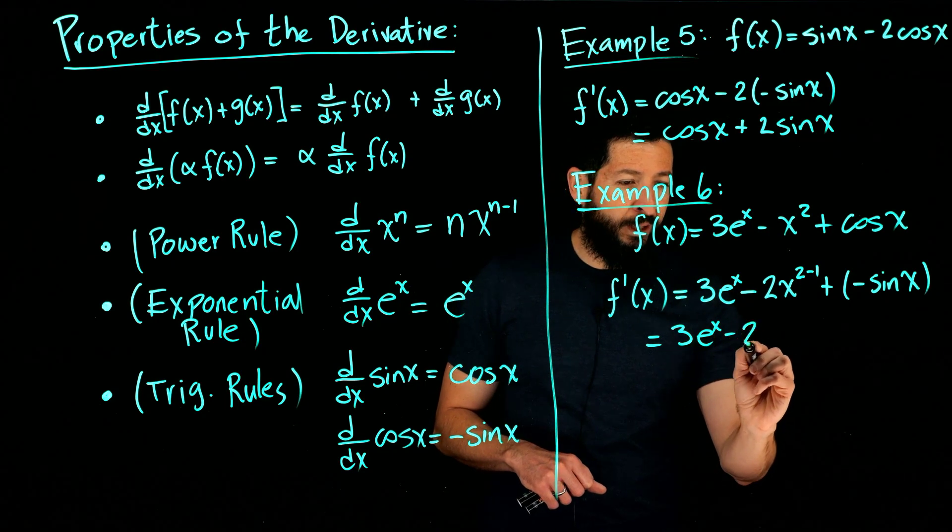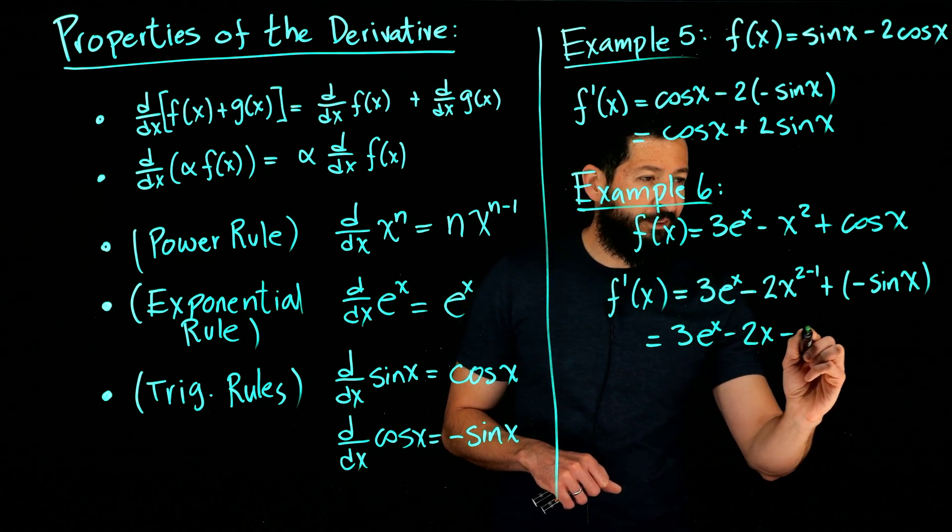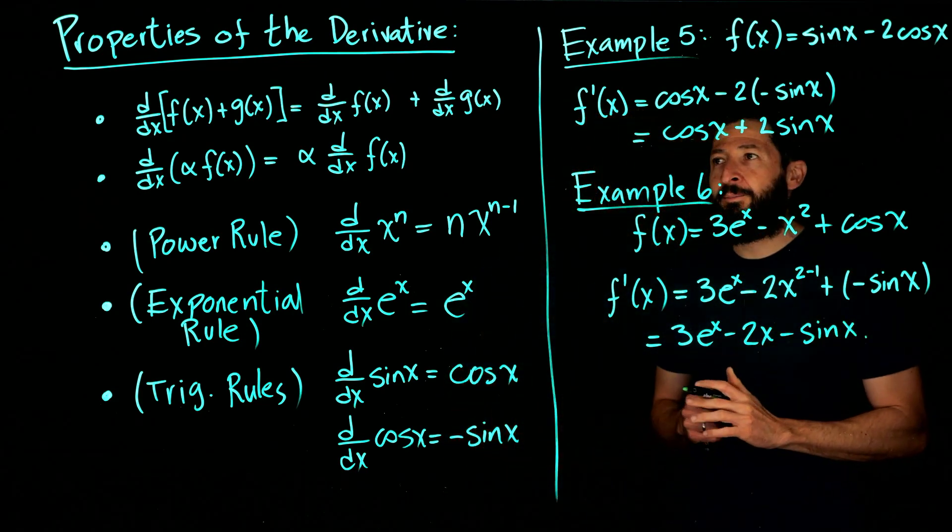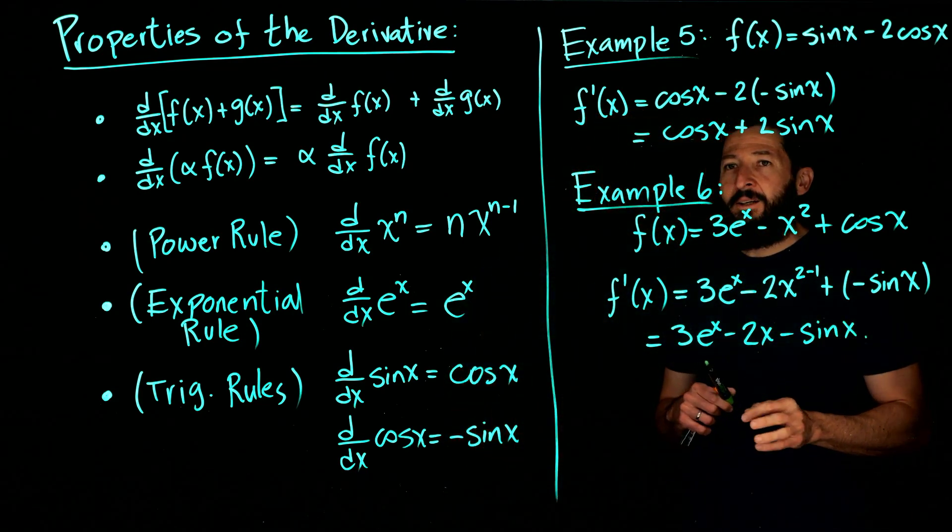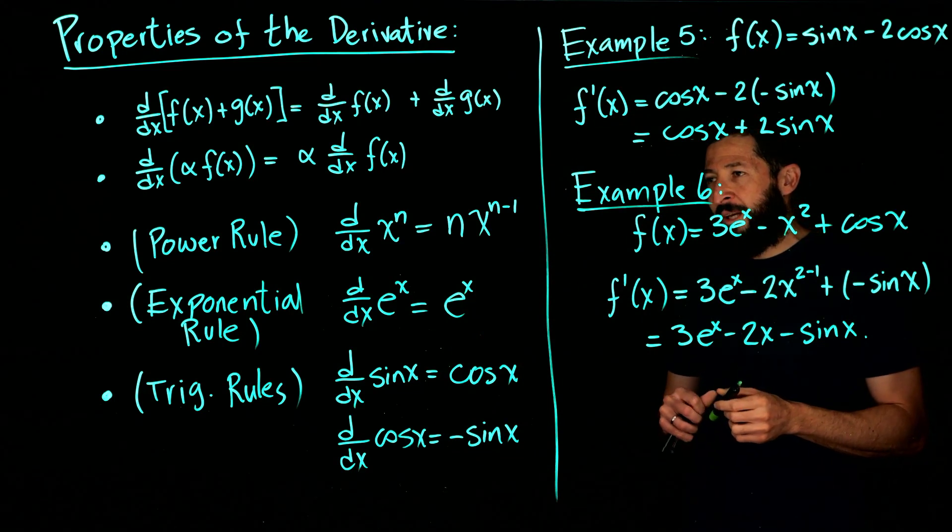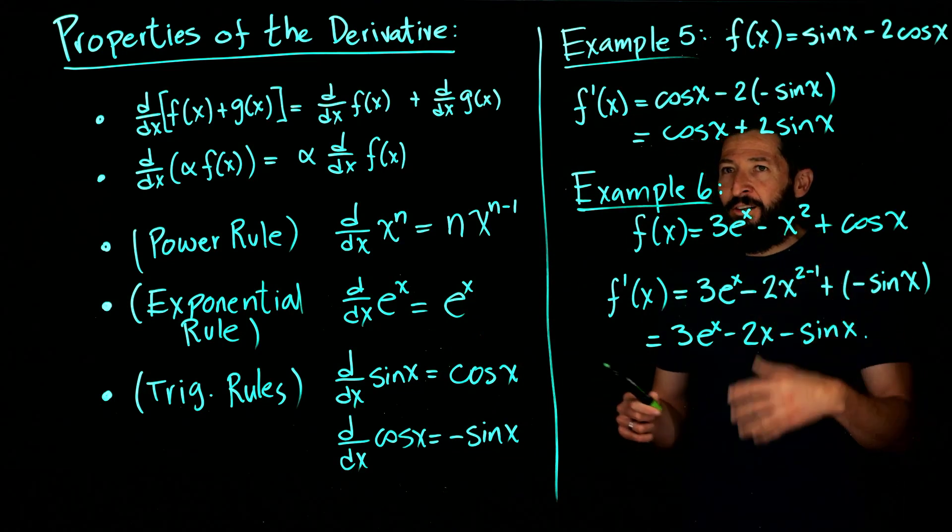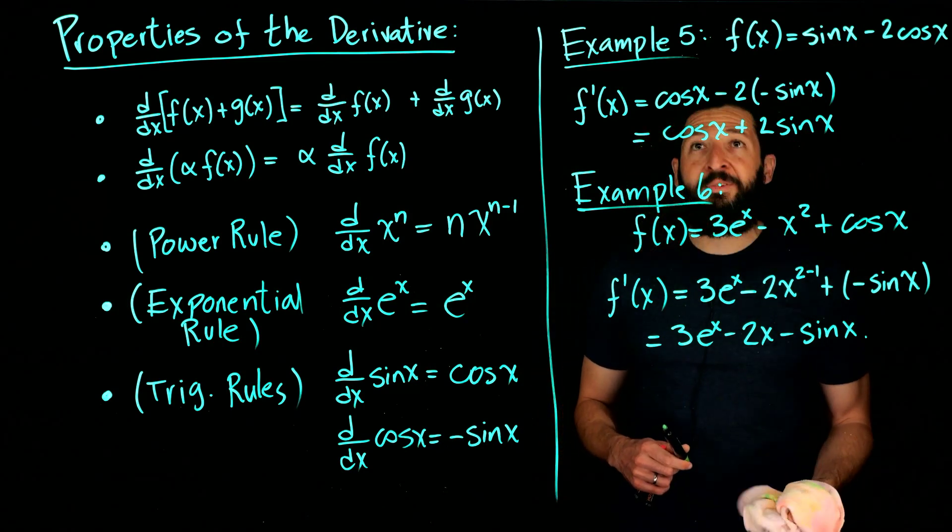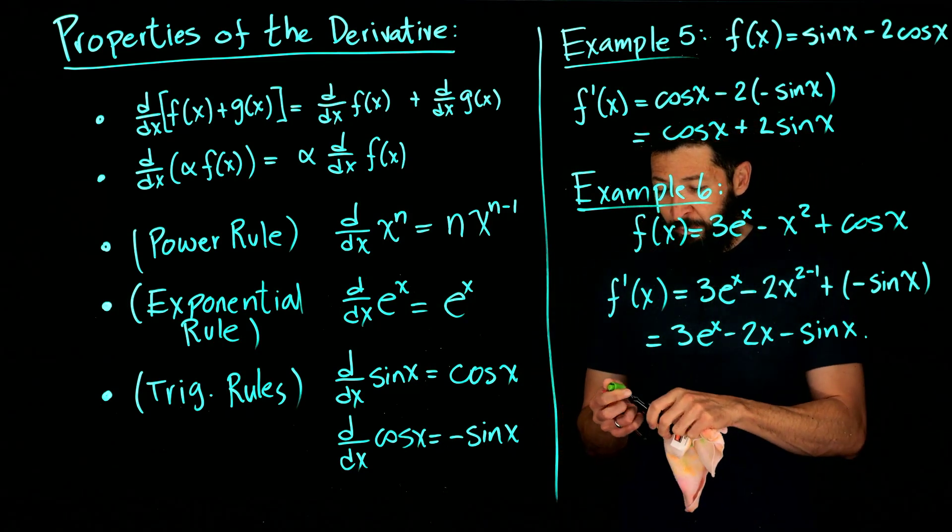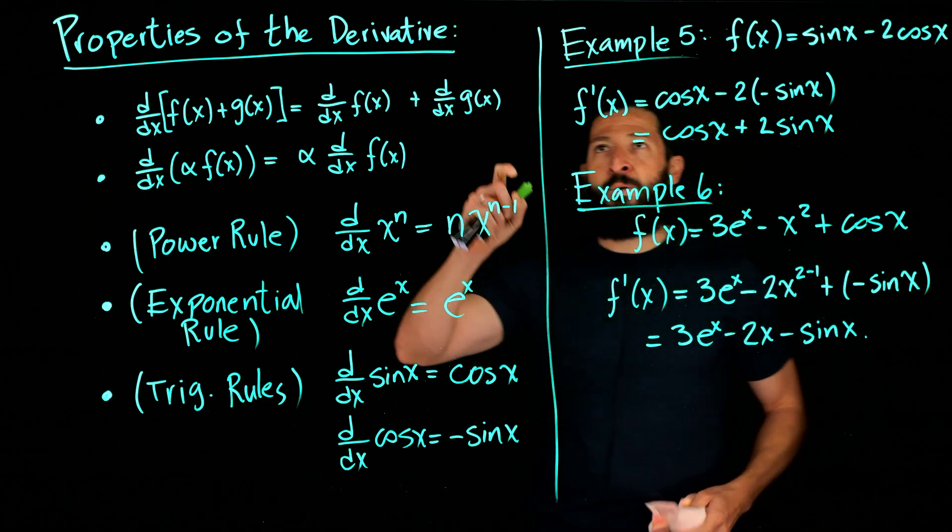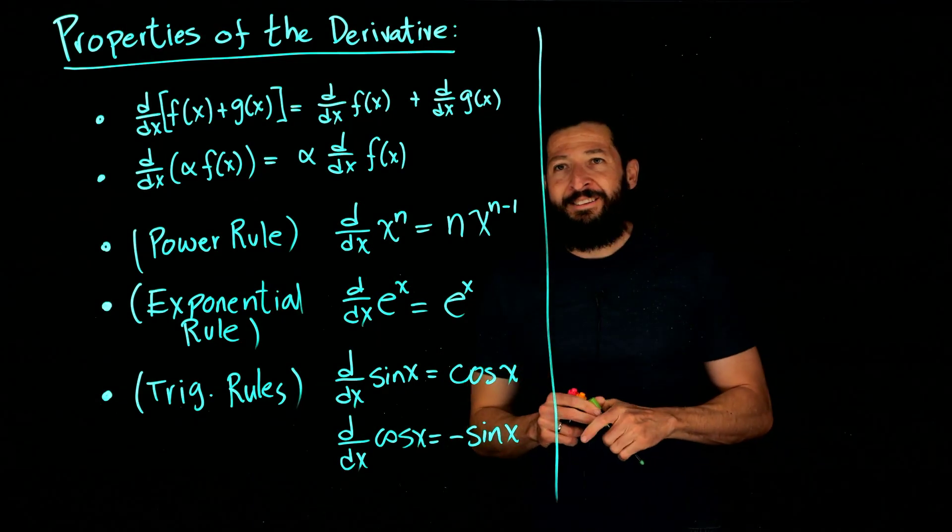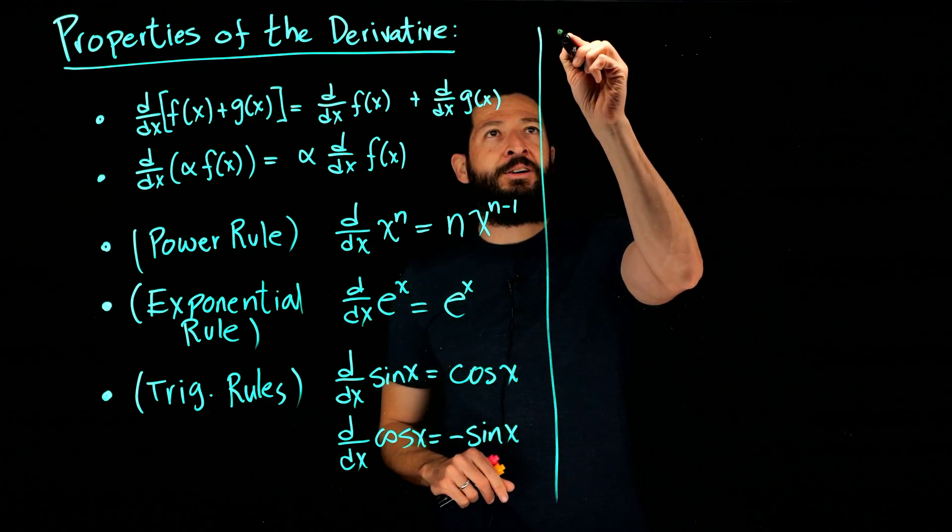Simplify: minus 2x minus sine x. That's what you get right there. All right, let's do one example where we actually apply our derivative to compute a tangent line. So let me erase here and we'll do one more example for the derivatives. This is going to be our last example for this video.